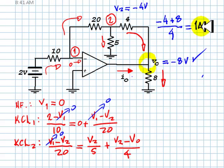And the current at the bottom going down, V0 divided by 8. That is negative 8 divided by 8. That is negative 1 amp.